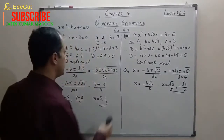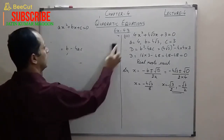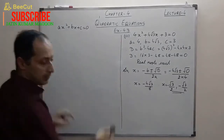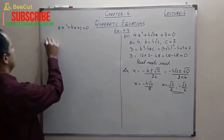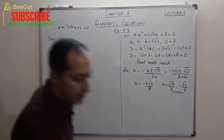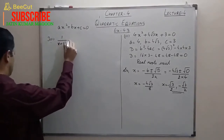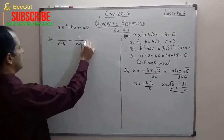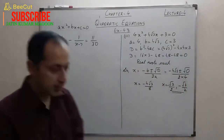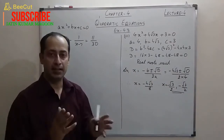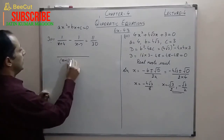Now we go to the next question — the second part of question 3: 1/(x+4) − 1/(x−7) = 11/30. Whenever we have fractions, the first step is to find the LCM.